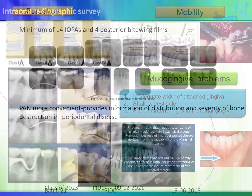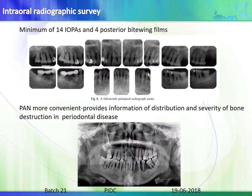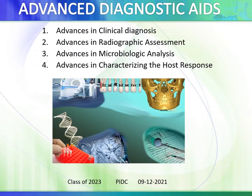For the intraoral radiographic survey, a minimum of 14 IOPAs and four posterior bitewing films constitutes a full radiographic survey. Panoramic radiography is more convenient and provides information about distribution and severity of bone destruction in periodontal disease; however, more detailed bone loss assessment is appreciated with IOPAs.